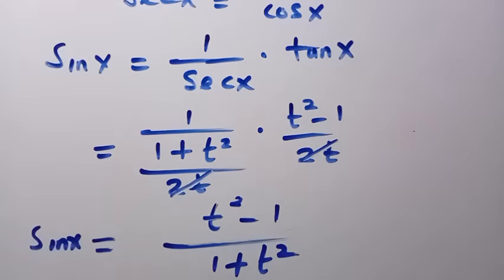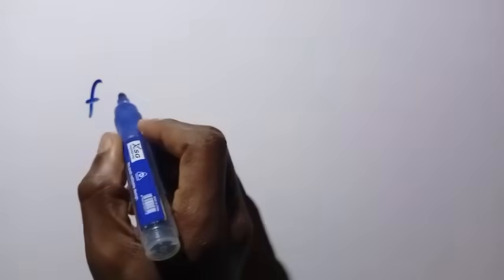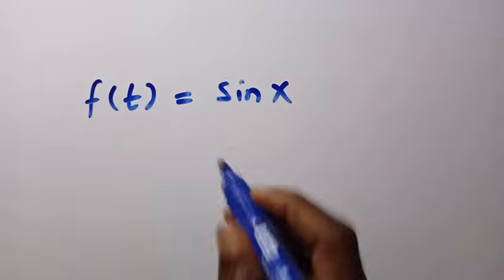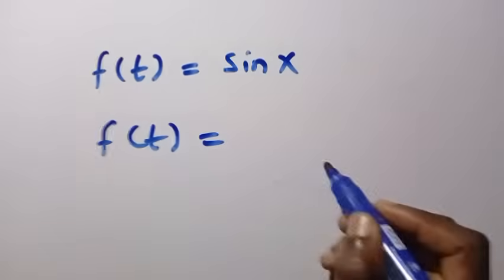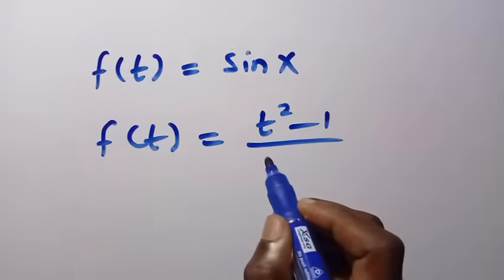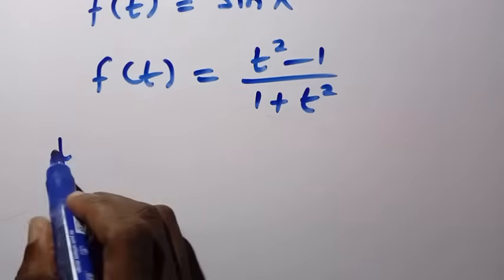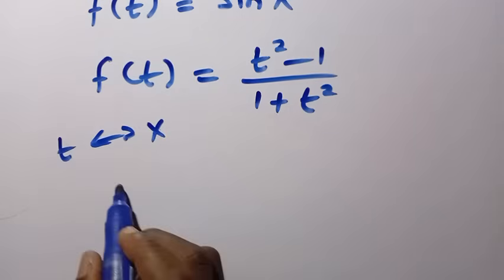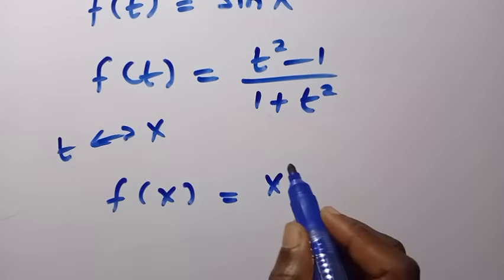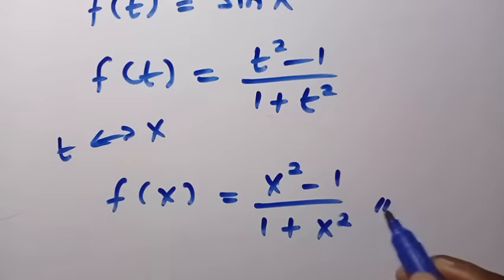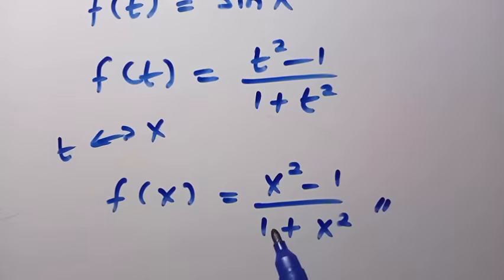Since we have gotten sin x, we can now find f of x. We recall that f of t equals sin x, and sin x has been derived to equal (t squared minus 1) divided by (1 plus t squared). To get f of x, we simply replace t with x, giving f of x equals (x squared minus 1) divided by (1 plus x squared). This is the result — a rational function, even though the original problem was a trigonometric function. That is how we solve this.